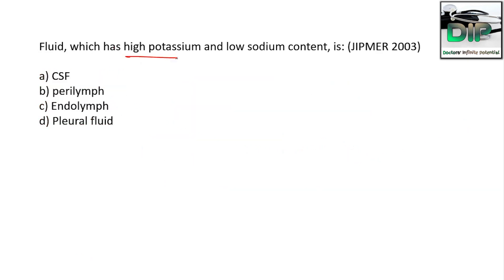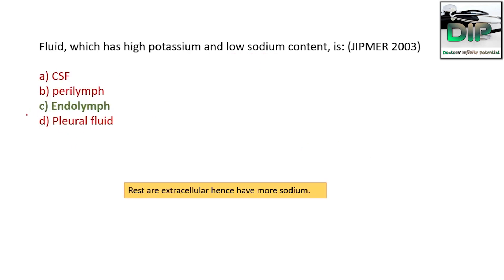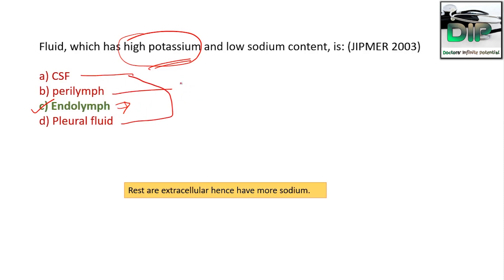The fluid which has high potassium and low sodium content is — CSF, perilymph, endolymph, or pleural fluid? The correct answer is endolymph, because endolymph is intracellular in content, so it is high in potassium. It is secreted by the stria vascularis, which is rich in potassium. CSF, perilymph, and pleural fluid are all rich in sodium, while endolymph is rich in potassium.